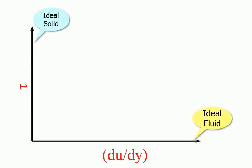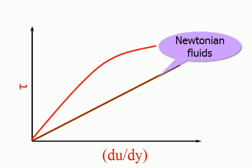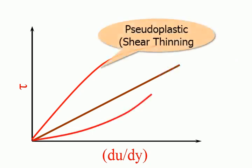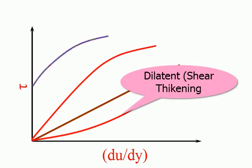Non-Newtonian Fluids can be further classified as: Simple Non-Newtonian, Shear Thinning (that is, Pseudoplastic), Shear Thickening (that is, Dilatant), and Plastic Fluids.